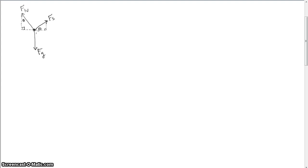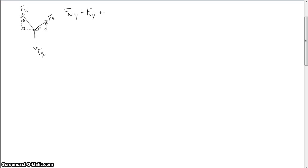To start off, I drew the force diagram here. One thing to note is we have two forces acting in the positive y-direction and one force, gravity, opposing them, and those are going to need to sum to zero. That's just from Newton's second law. So I have F_n_y plus the force of static friction in the y-direction plus F_g — which I'm just writing as mg — equal to zero. That's my y-direction.